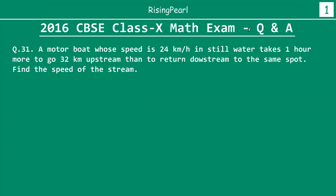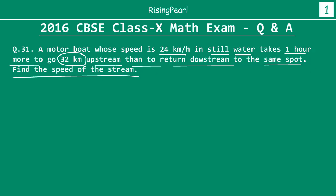Let's take a look at the question first. A motorboat whose speed is 24 km per hour in still water takes one hour more to go 32 km upstream than to return downstream to the same spot. Find the speed of the stream. This may sound like a pretty straightforward question — it's a very short question — but let's make sure that we understand it very clearly. We have a motorboat whose speed is given in still water, and it takes one hour more to go 32 km upstream than to return downstream to the same spot.